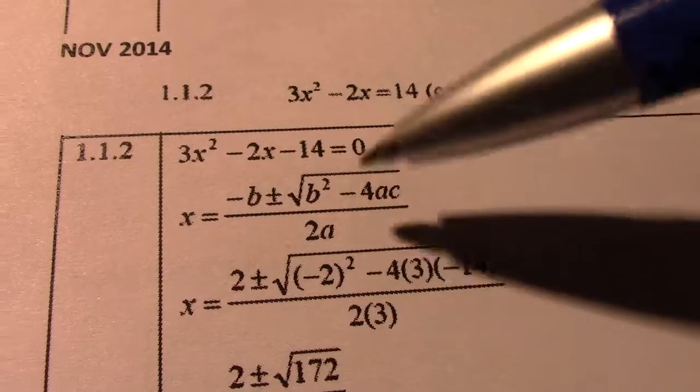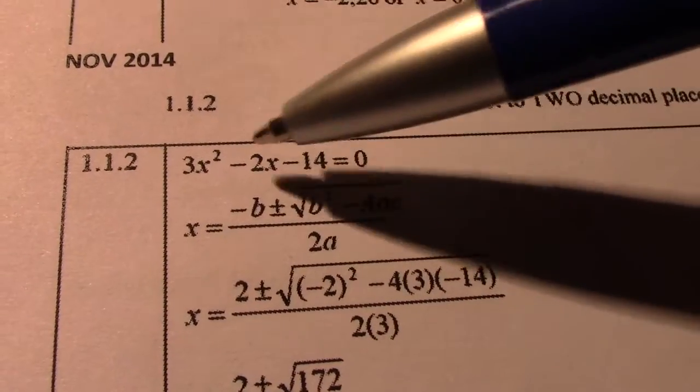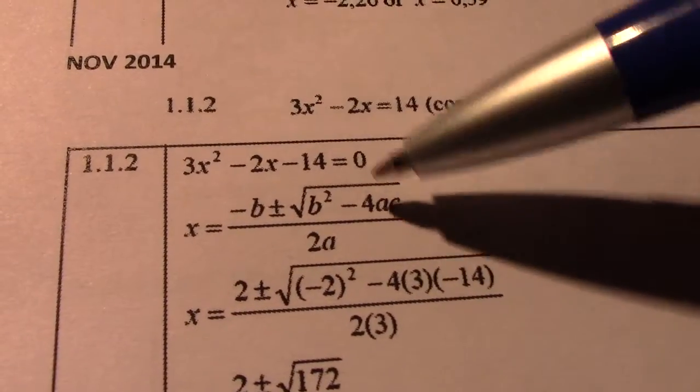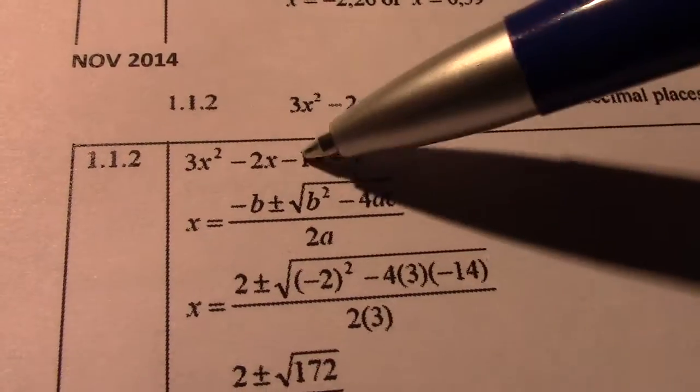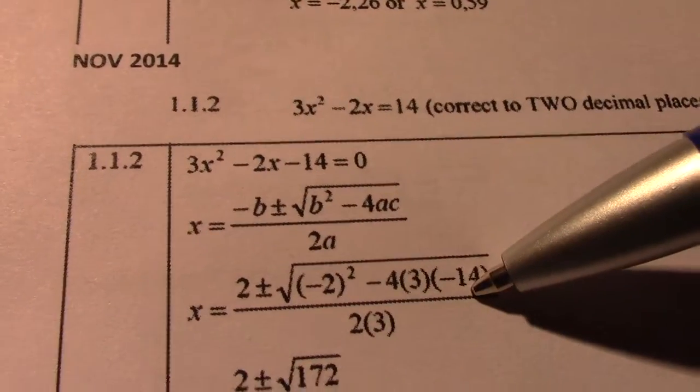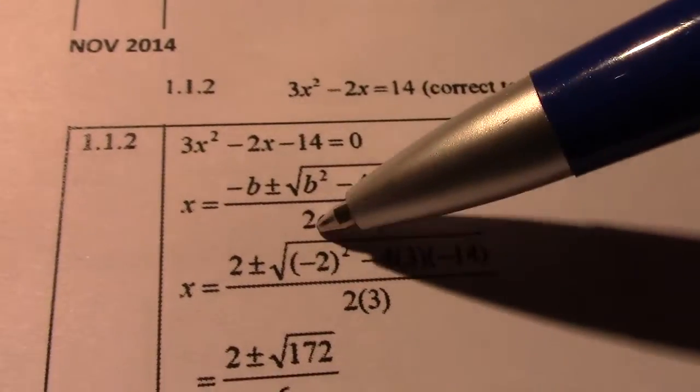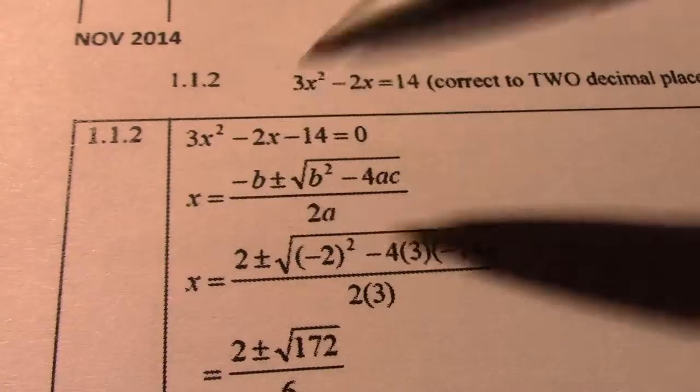So, p squared: negative 2 squared, minus 4 times a, which in this case is 3, and my c, negative 14. Don't forget the sign. I hope you see how we've substituted. 2 times a, which is 2 times 3.